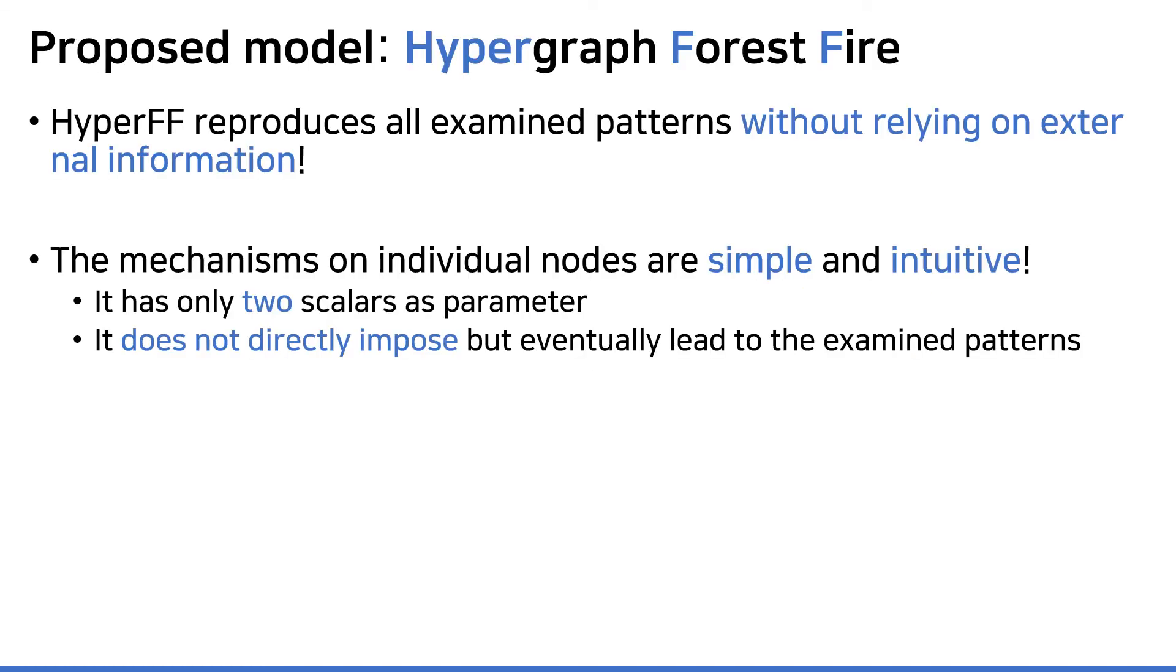To sum up, our model Hyper-FF successfully reproduces all examined patterns without any help of external information given in advance. All the model needs are two parameters, burning and expanding probability. Also, it has a simple and intuitive mechanism that makes sense as illustrated through the example of co-authorship. And moreover, it does not directly impose, but eventually leads to the examined patterns.